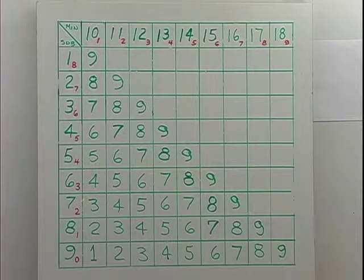10 subtract 7, 1 and 2 is 3. 11 subtract 8, 2 and 1 is 3. 12 subtract 9, 3 and 0 is 3, so this diagonal is a 3.